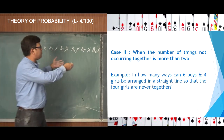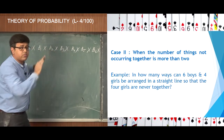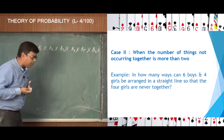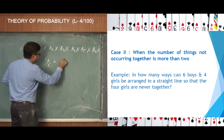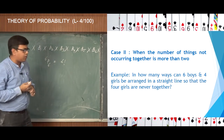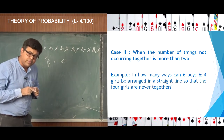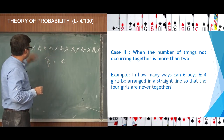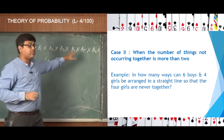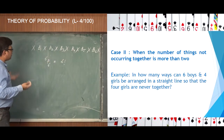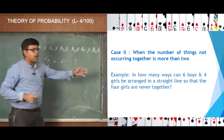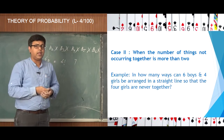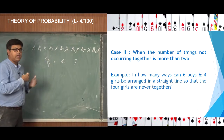First, we fix up the six boys — b1, b2, b3, b4, b5, b6. Since there is no restriction on the boys, it is an unrestricted permutation, so the six boys can arrange among themselves in 6P6 ways, which is 6 factorial ways. So 6 factorial is the number of ways the six boys can arrange among themselves.